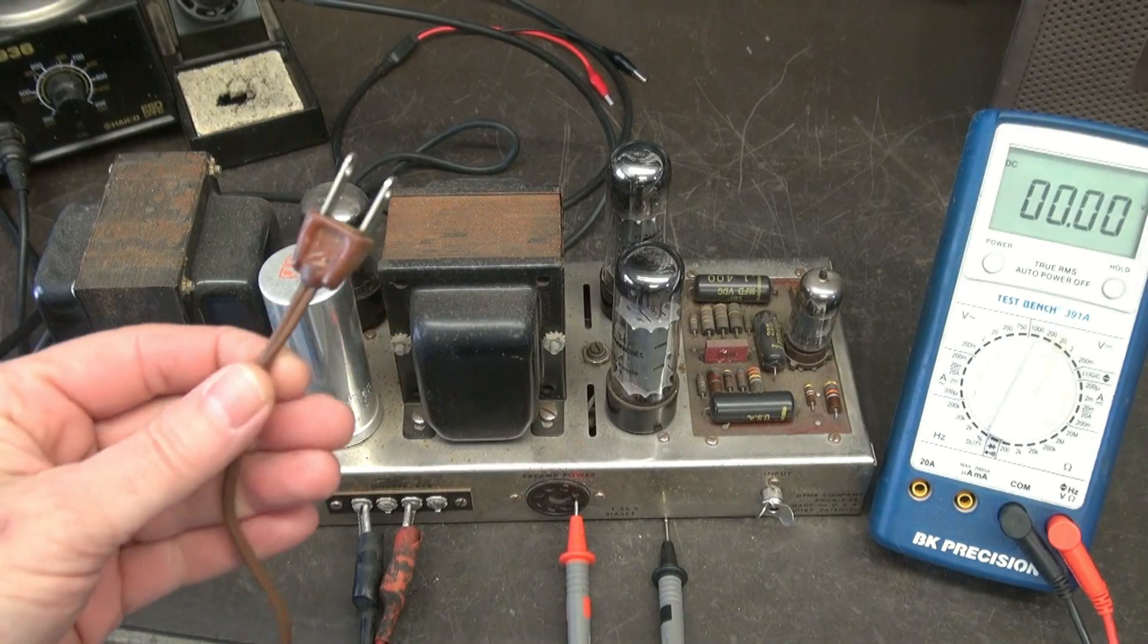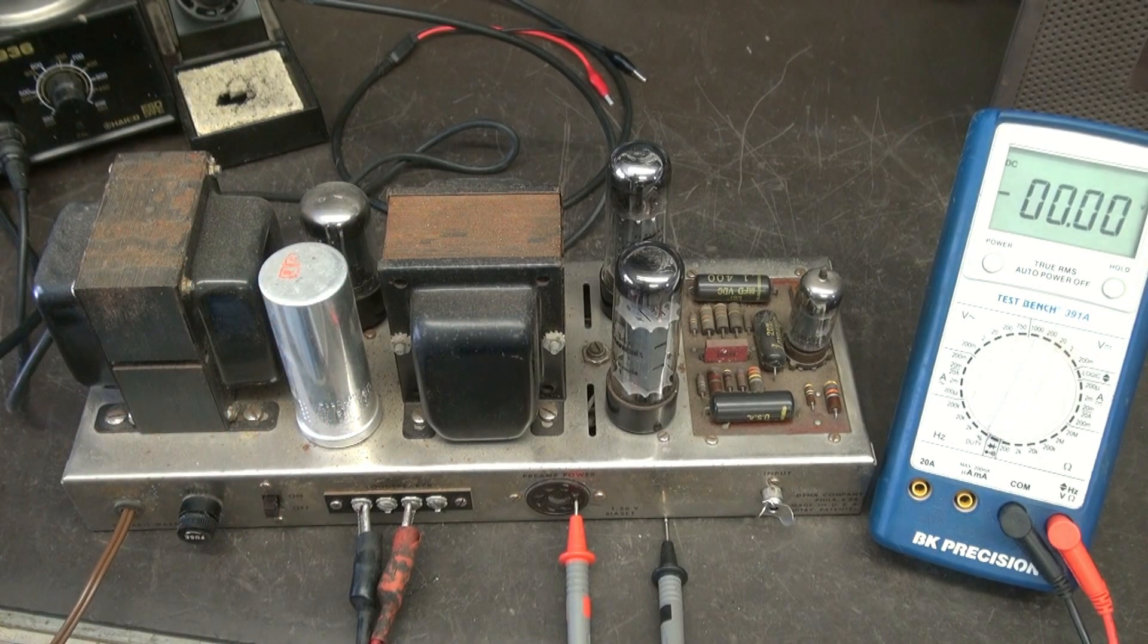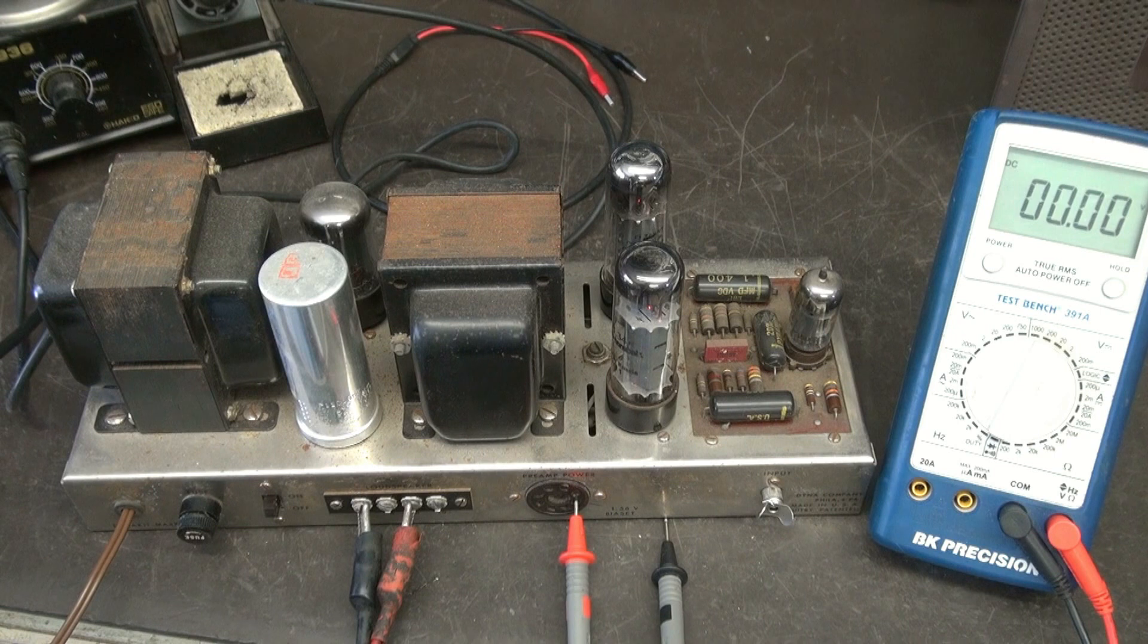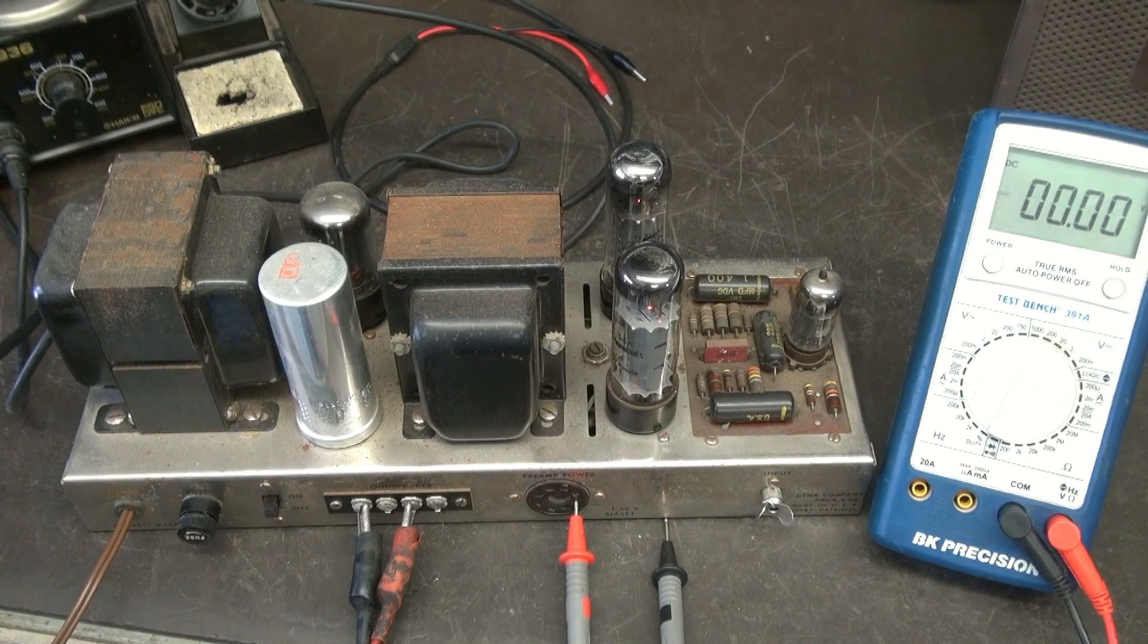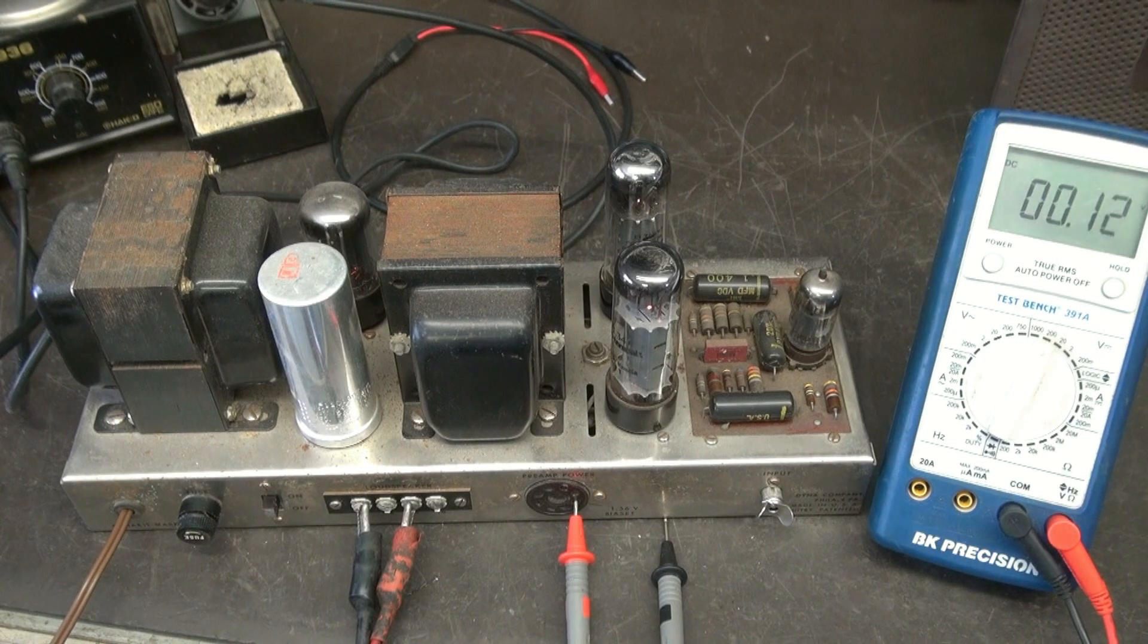Remember, the maximum voltage that we want to see is 1.56 volts. Anything over that could be doomsday for those output tubes. Alright, she came up alright. So now I got the old AC cord and plugged him in direct. Let this thing come up at full voltage.